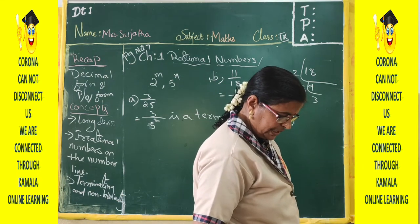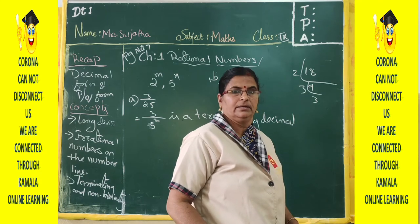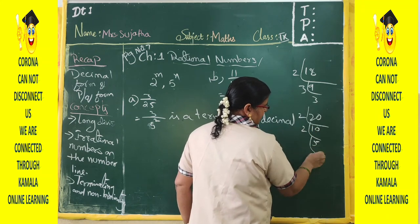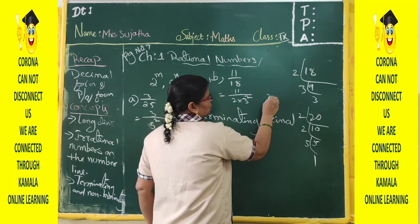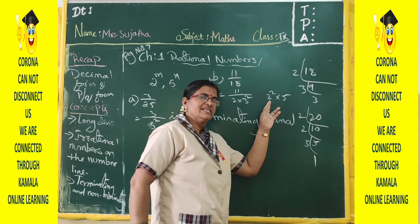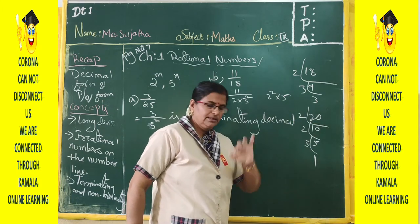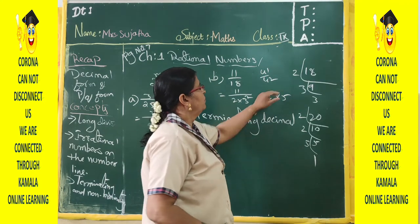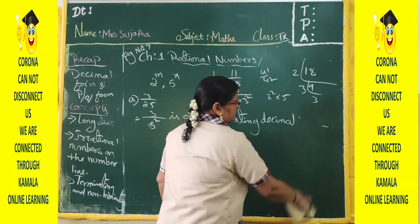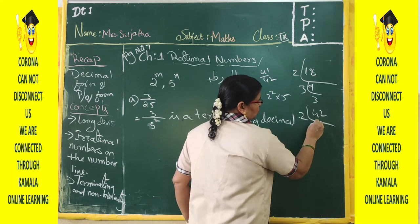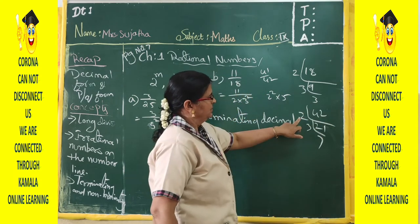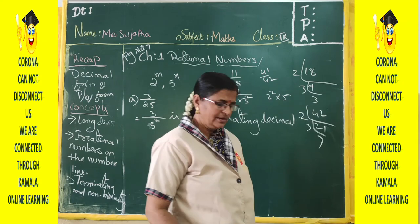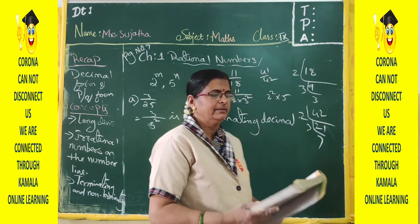Next, 13 by 20: the prime factorization of 20 is 2 squared times 5. The bases are 2 and 5 only, so it is a terminating decimal. And 41 by 42: the prime factorization of 42 is 2 times 3 times 7. Along with 2, we also have 3 and 7, so it is not a terminating decimal.